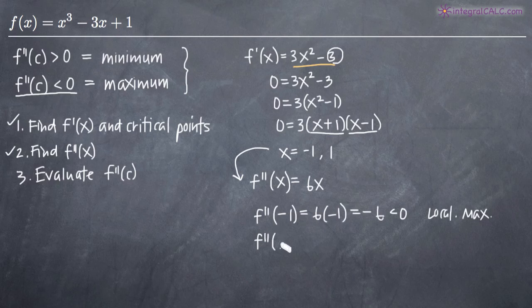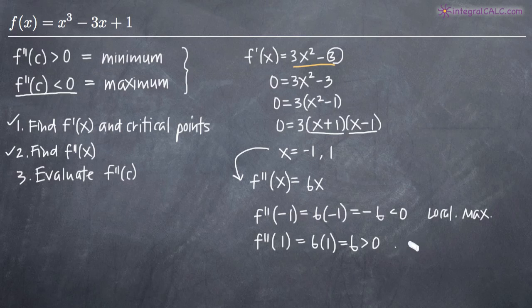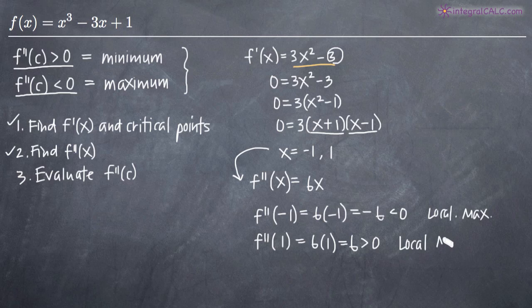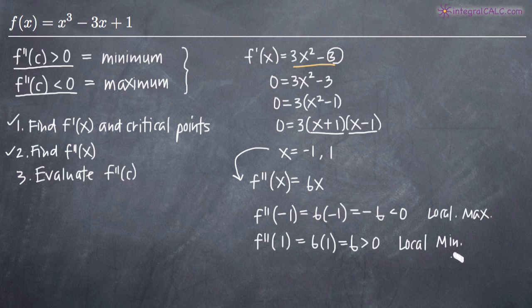Now we find f double prime of the second critical point: 6 times 1 gives us positive 6, which is greater than zero. According to the second derivative test, when it's greater than zero, we're looking at a local minimum — possibly a global minimum, but we'd need to evaluate further to determine that. So we have a maximum at x equals negative 1 and a minimum at x equals positive 1. Remember it's opposite: less than zero means maximum, greater than zero means minimum.